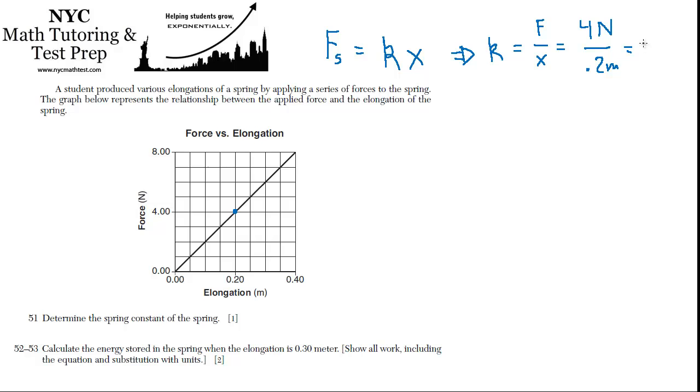So if you put that into your calculator, you'll get 20 newtons per meter. And that is the answer to the first part. So that's done. 20 newtons per meter.